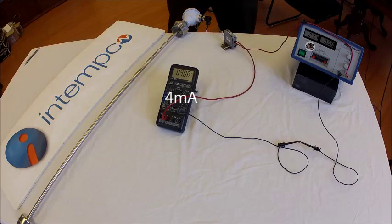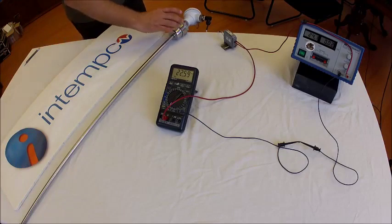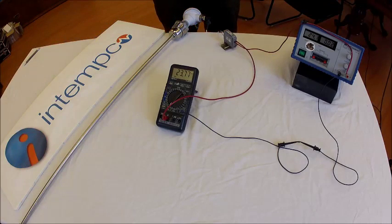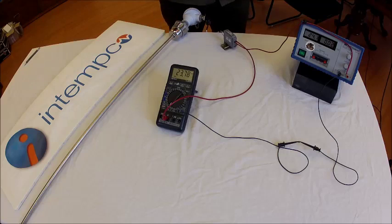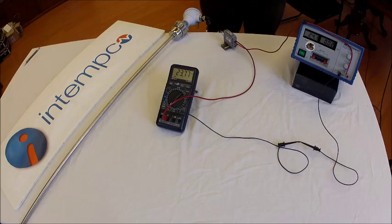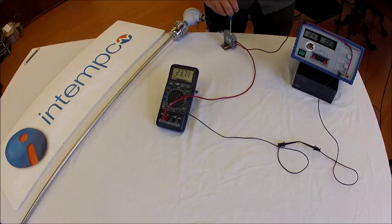If we move the float to the top position, you can see that the current changes almost to 20 milliamps. We can adjust the top point by adjusting the trim pot marked S. Observe the change on the ammeter as we make the adjustment.